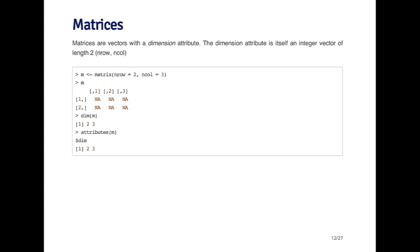If I call the attributes function on M, you'll see it returns a list where the first element is the dim element, and it has the vector two, three. So these are all aspects of a matrix, which is a vector that has a dimension attribute.